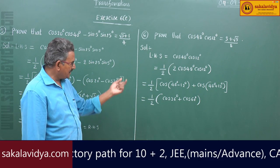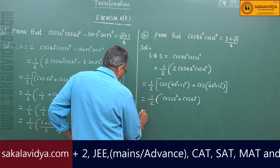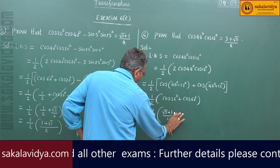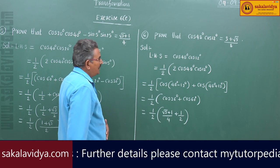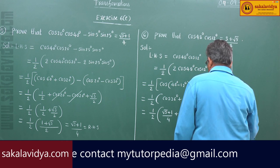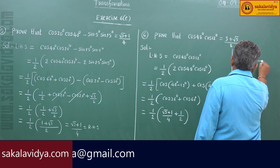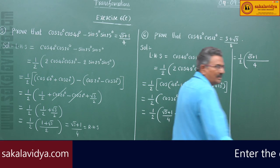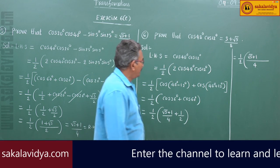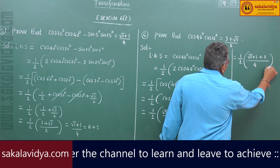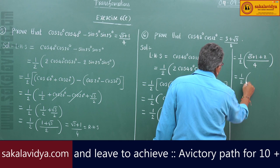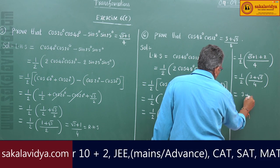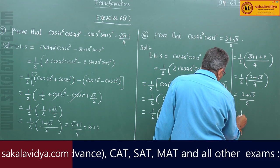We know cos36 and cos60. So we write (1/2) × [(√5+1)/4 + 1/2]. Taking LCM of 4, this gives (1/2) × [(√5+1+2)/4] = (1/2) × (3+√5)/4 = (3+√5)/8, which equals the right hand side.